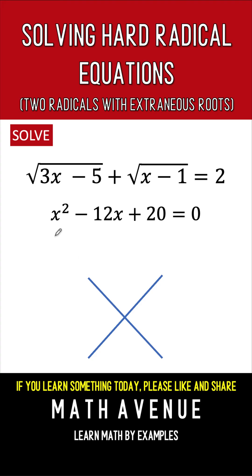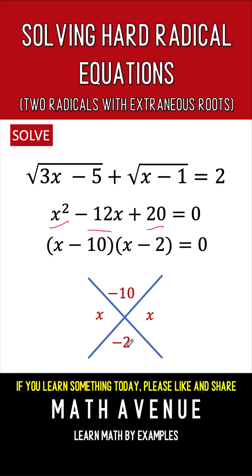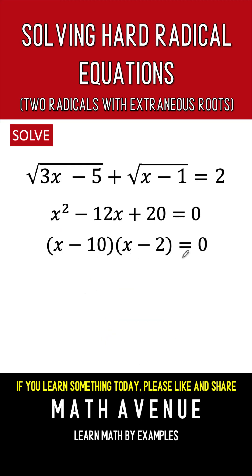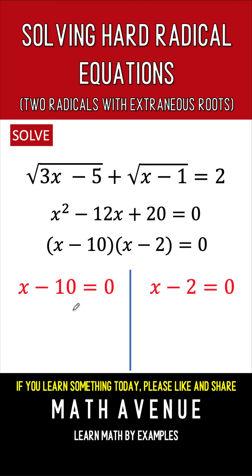We solve by factoring. The factors of x squared are x times x. We need factors of 20 that add up to negative 12 — those are negative 10 and negative 2, since their product is positive 20 and their sum is negative 12. So we have two factors: x minus 10 and x minus 2. Setting each factor equal to 0, we get x equals 10 and x equals 2.